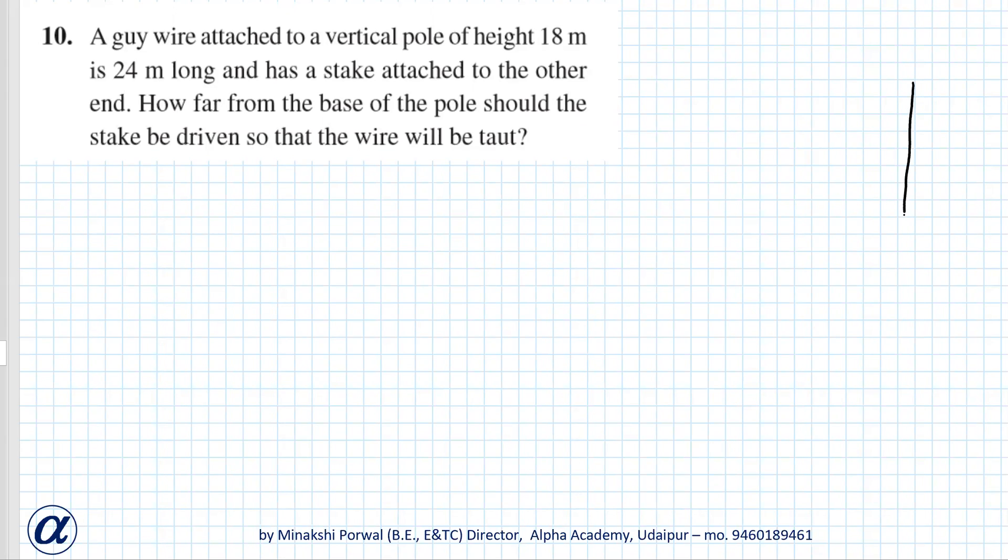So basically there is a vertical pole whose height is 18 meters and a wire is there which is attached to it. It is 24 meters long. And has a stake attached to the other end.